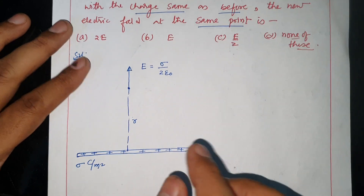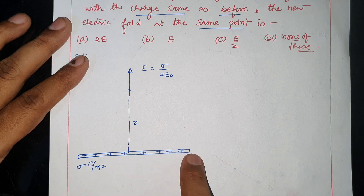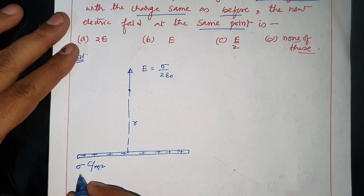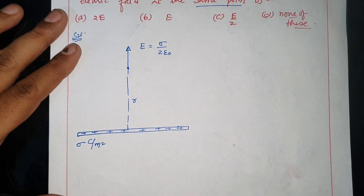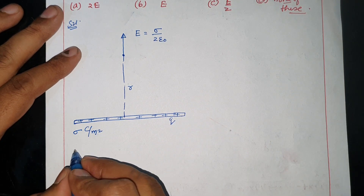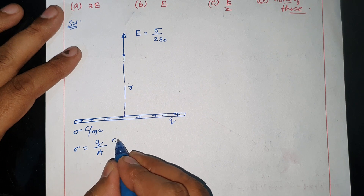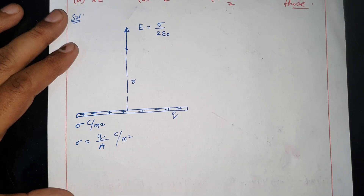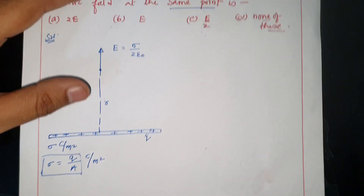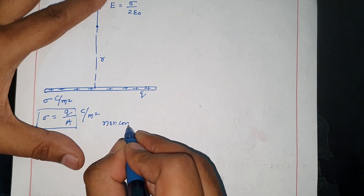If the charge is positive, the field points perpendicular and away from the surface; if negative, it points toward the surface. Here σ is the surface charge density. If the total charge on the sheet is Q, then sigma equals Q upon A, where A is the area. So for this non-conducting sheet, E = σ/2ε₀ = Q/(2ε₀A).